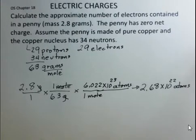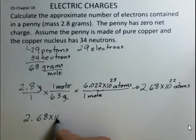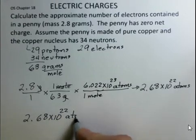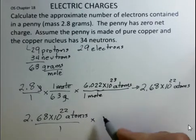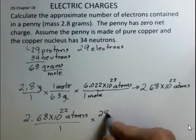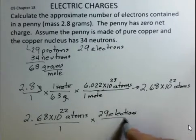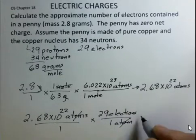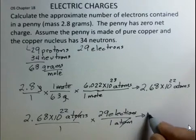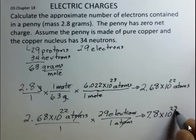The last step is to start with the number of atoms and use a conversion factor that there are 29 electrons in each atom of copper. And multiplying that out, I'm going to round here, we get 7.8 times 10 to the 23rd electrons.